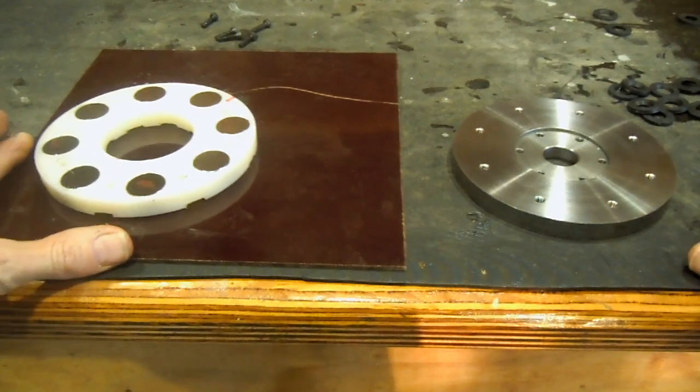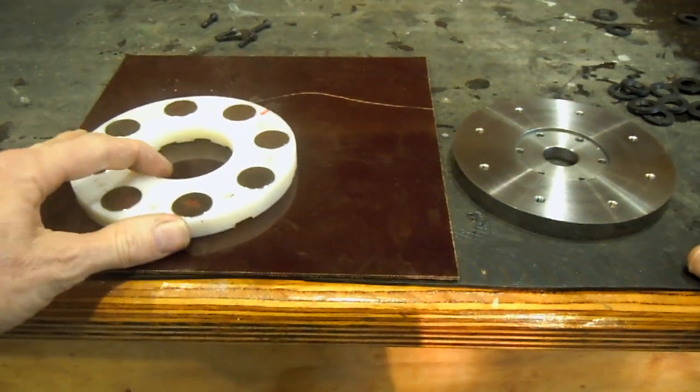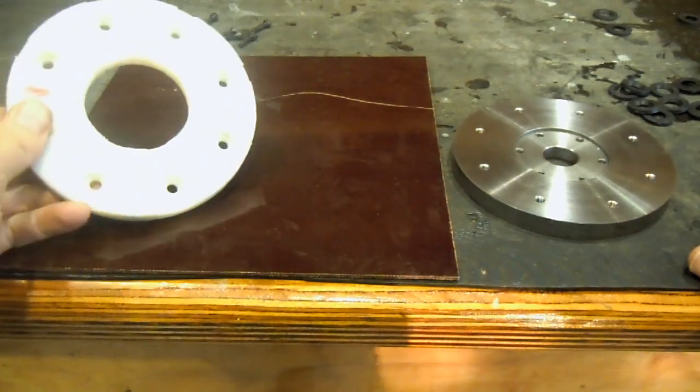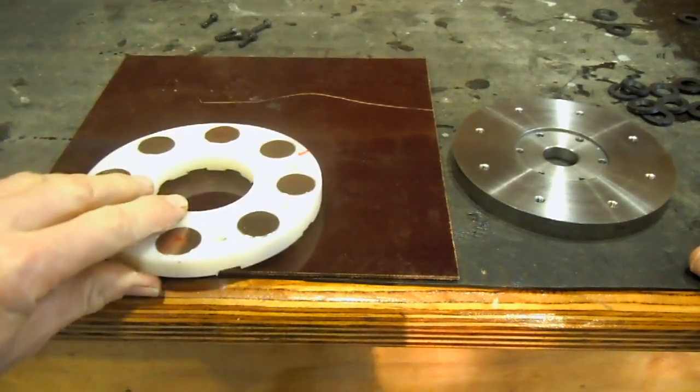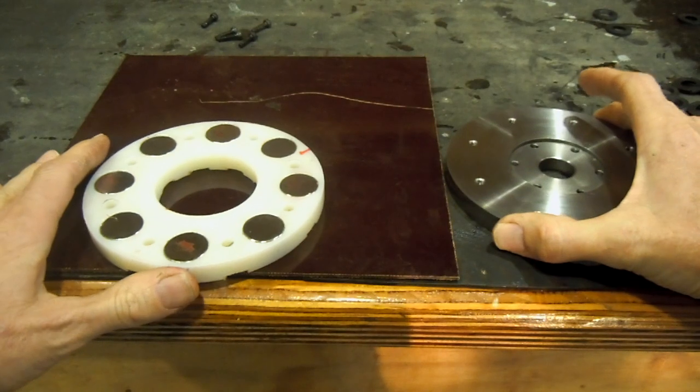What I'll attempt to do here is to demonstrate a possibility of how to mount the plastic disc here with the magnets onto a steel disc.